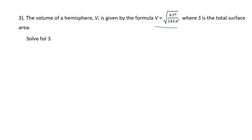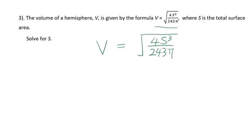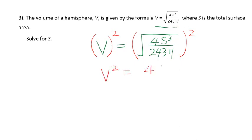Let's go to number 3. The hemisphere volume V is given by this formula, where S is the total surface area. Solve for S. In your mind you need to think how to isolate S on one side. First of all, since we have a square root, we square both sides to get rid of it. We get V squared equals 4S to the third power over 243 pi.